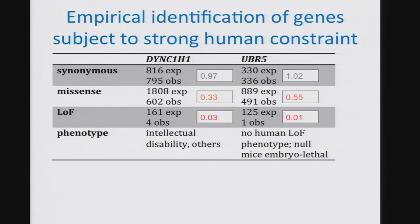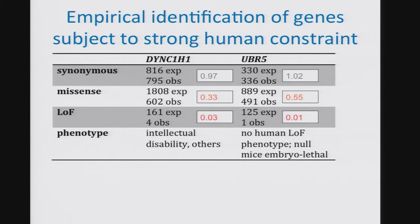This is a gene where we know what happens when you inactivate it. By contrast, UBR5 is a gene where we have no idea what disease is associated with it. We know it's involved in the ubiquitin pathway, and if you knock it out in mice it kills them during embryogenesis, but there's no known human loss-of-function phenotype. Yet this gene has a profile of missense depletion and — most strikingly — loss-of-function depletion completely consistent with a very nasty haploinsufficient disease gene, with a nearly complete absence of loss-of-function mutations in our population. This suggests that even heterozygous loss of function in this gene does have some quite severe effect on human phenotypes.